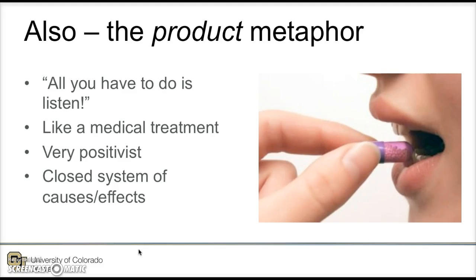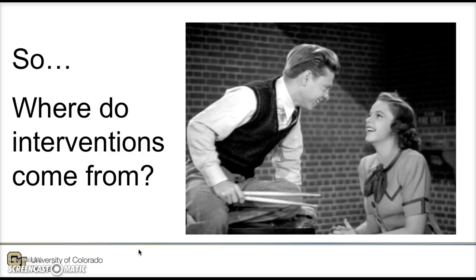There's an underlying implicit idea that there's a product — a pill I can take to fix my problem. It's similar to a medical treatment, so a medical intervention isn't so foreign. The intervention idea assumes we're trying to create fixes, treatments that will fix a problem. That's very positivist in its underpinnings — it assumes a closed system of causes and effects and doesn't allow for things to be messy and dynamic, but we use that term while being aware of its implicit bias.